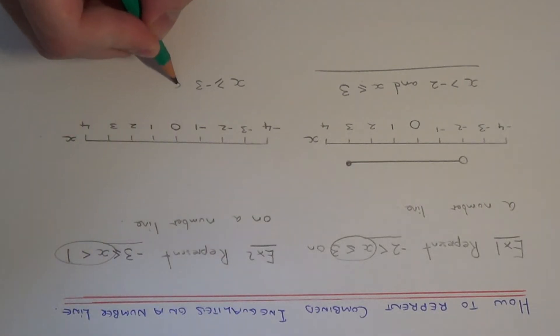And the other bit of our inequality is x is less than 1. So x can be a number more than or equal to minus 3 and less than 1.